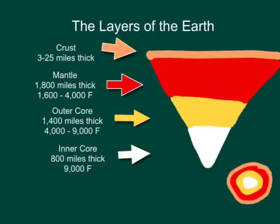The layers of the earth. The earth is divided into four main layers: the crust, the mantle, the outer core, and the inner core. The crust, the topmost layer which is where we live, is between 3 and 25 miles thick depending on the location.